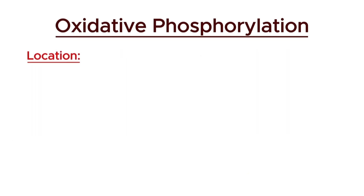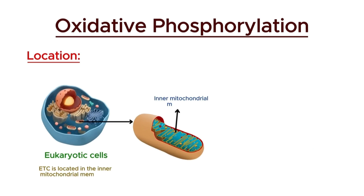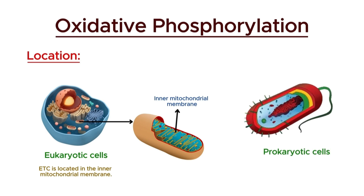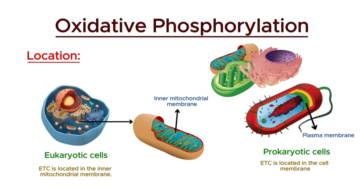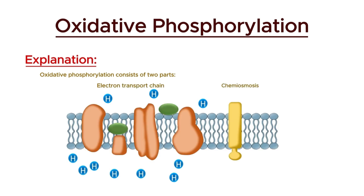In eukaryotic cells, the electron transport chain is located in the inner mitochondrial membrane. In prokaryotic cells, such as bacteria, it is located in the plasma membrane. Prokaryotic cells, unlike eukaryotic cells, lack internal membrane-bound organelles; therefore, their electron transport chain is located in the plasma membrane. As mentioned earlier, oxidative phosphorylation consists of two parts: the electron transport chain and chemiosmosis.